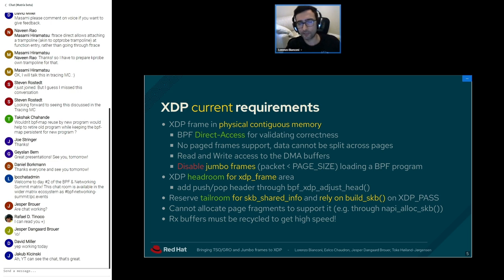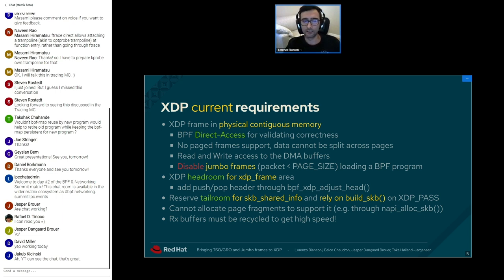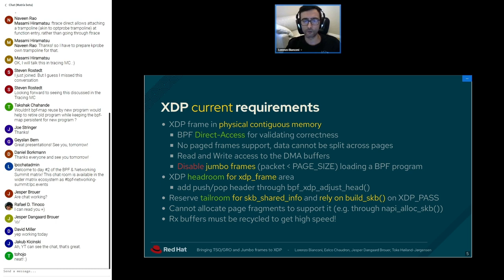XDP achieves its performance boost by introducing strict requirements, in particular for the memory layout. XDP requires that the received frame is contiguous in memory — for example, to satisfy the BPF direct access requirement used for verifier correctness. We cannot support an indirect layer for performance reasons, so we cannot support paged frames, or we must disable jumbo frames — frames with size bigger than a single page — whenever we load the BPF program on the NIC.